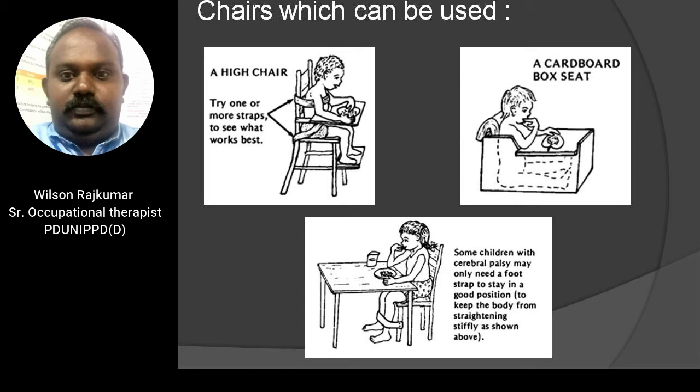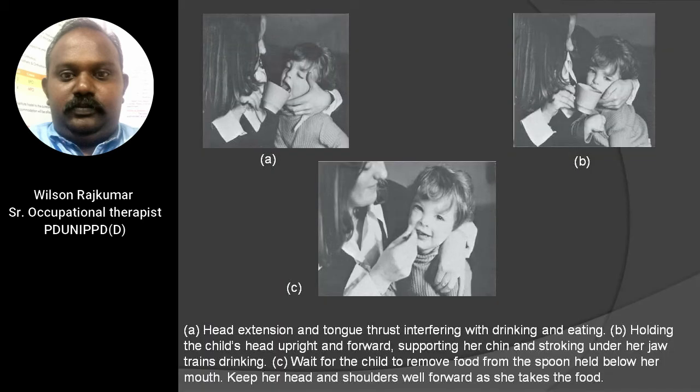Different types of chairs can be used for promoting feeding in cerebral palsy children, and it is the therapist's role to determine what type is needed. Options include a high chair with one or two straps in the abdomen or chest, a cardboard box seat for complete protection, or simply a footstep to maintain a good position. Head extension and tongue thrust can interfere with drinking and eating. To correct this, hold the child's head upright and forward, support the chin, and stroke under the jaw. Wait for the child to remove food from the spoon held below her mouth, keeping head and shoulders well forward.